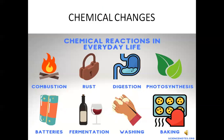Chemical changes are changes that occur with the formation of a new substance with a different chemical composition, or the transformation of one substance into another with the evolution or absorption of heat or light energy. We already saw in the previous lesson some examples of chemical changes.